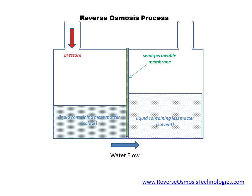Slides two and three demonstrated that by the process of osmosis, the solvent would naturally travel through a semi-permeable membrane to dilute the solute. But this slide shows that when enough pressure is applied to the liquid, the osmosis process can be reversed and the liquid is forced through the membrane in a reverse direction, resulting in reverse osmosis.